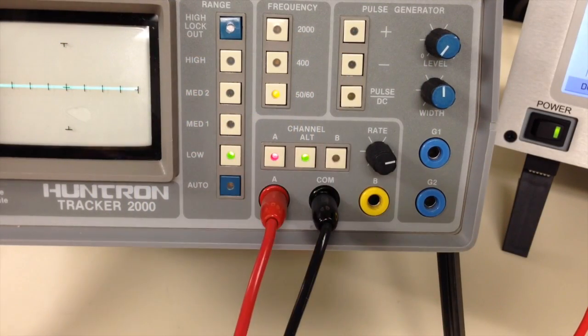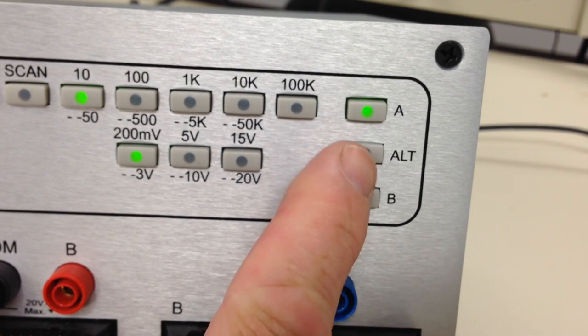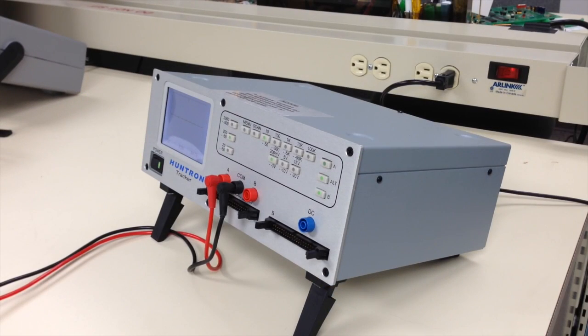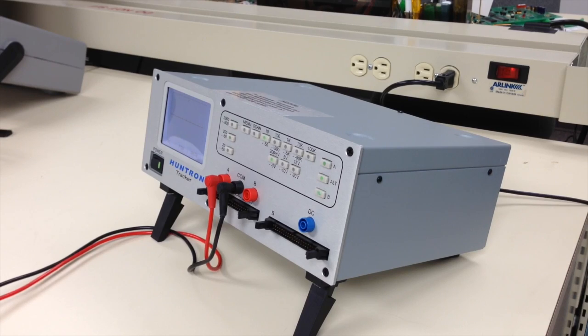Both units feature A and B channel connections used for making direct comparisons between PCBs. The all-metal case construction of the tracker 2800 makes it more robust than the all-plastic 2000, reduces electromagnetic emissions, and allows it to be CE certified.